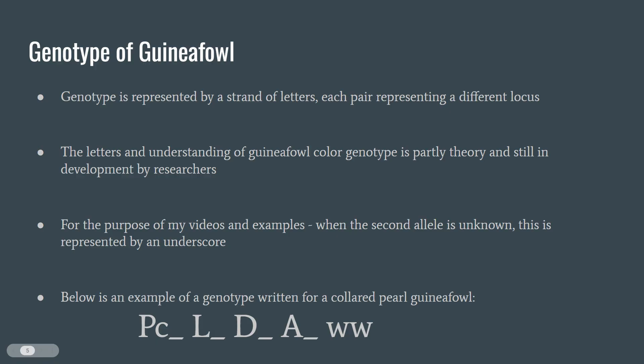Genotype is typically represented by a strand of letters, each pair representing a different locus. It is important to note that the letters we use in the genotype of guinea fowl, as well as the understanding of guinea fowl color genetics, is a constantly evolving idea as more research is done. For the purpose of my videos, I will use an underscore when the second allele is unknown. Even though this is not considered common practice, I find it helpful when learning and talking about guinea fowl genetics. To find out what the second allele a bird carries, you can do test breedings with specific colors.